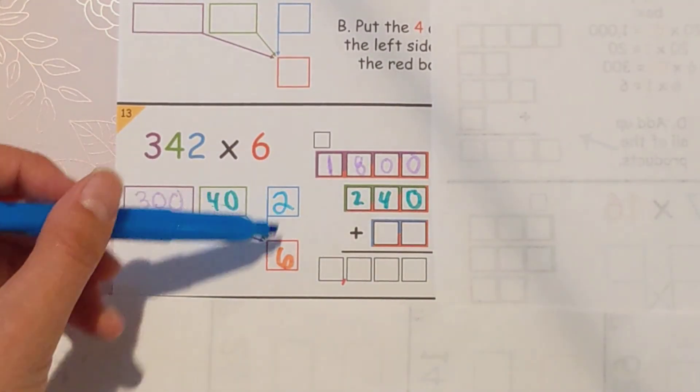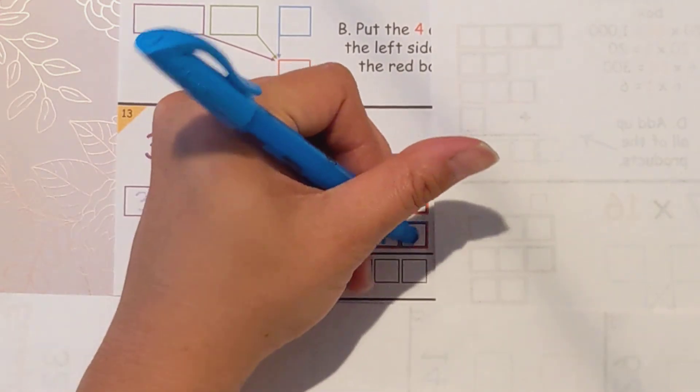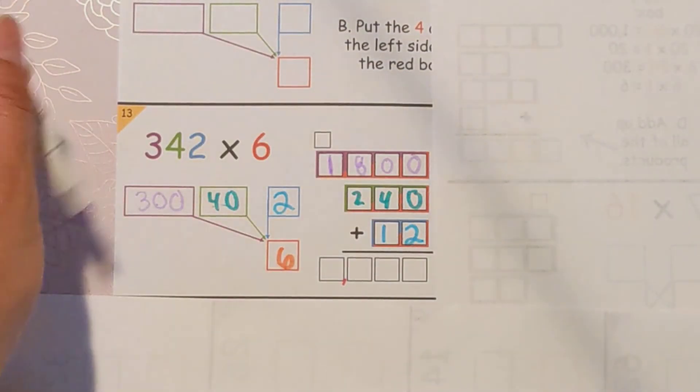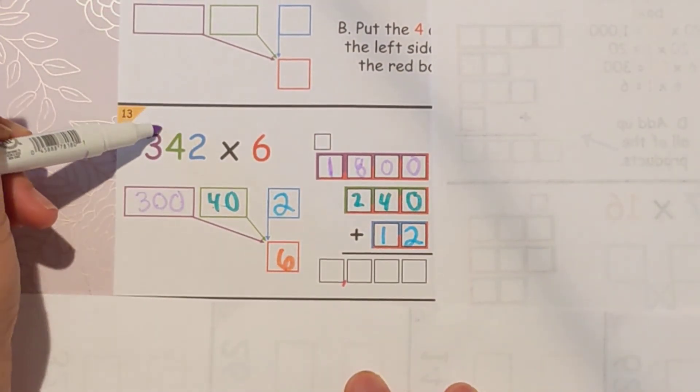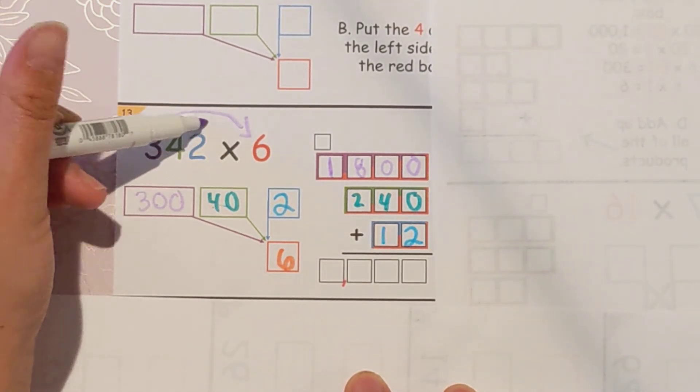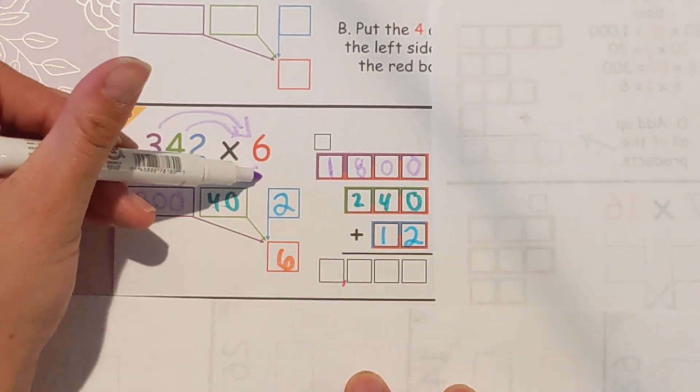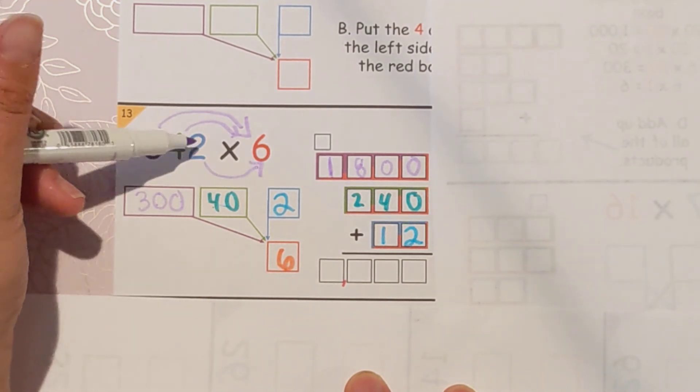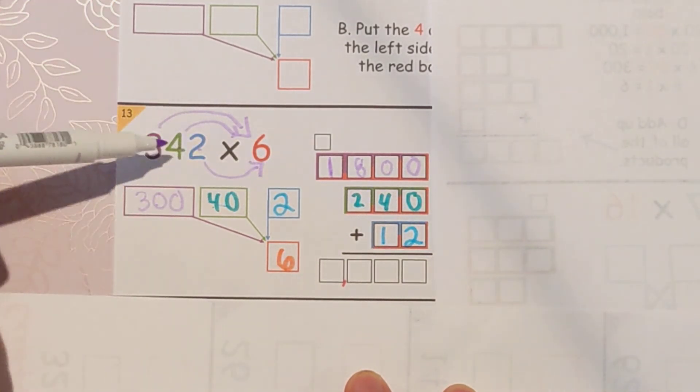Finally, we're going to do two times six, which is 12. So what we just did there is we did 300 times six, and then we did 40 times six, and then we did two times six. We just did each digit at a time. We did the parts.